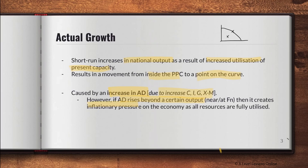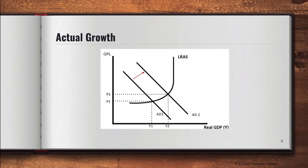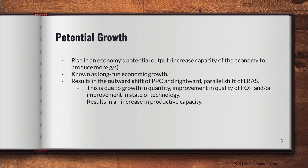At full employment all resources are being used within the economy. Looking at the diagram for actual growth: it's simply a rise in AD below full employment — not near full employment, which would cause a greater rise in price levels and inflation. The result is an increase in national output from Y1 to Y2, caused by a rise in AD from AD1 to AD2, due to a rise in C, I, G, or net exports, causing short-run economic growth.